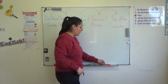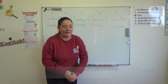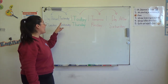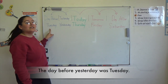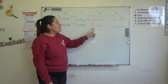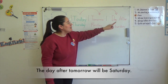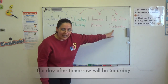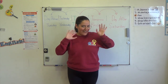So let's do it one by one. Today is Thursday. Yesterday was Wednesday. The day before yesterday was Tuesday. Tomorrow will be Friday. And the day after tomorrow will be Saturday. Okay everybody, that's it. Thank you.